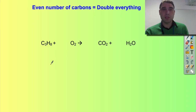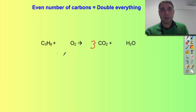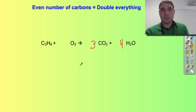Now let's look at propane, C3H8. Three carbons here, so I'm going to need three carbon dioxides. I've got eight hydrogens and I need two per water molecule, so I'm going to need four water molecules. Adding up my oxygens: three times two is six, plus four is ten, so I'm going to need five oxygen molecules. That's nice and balanced.